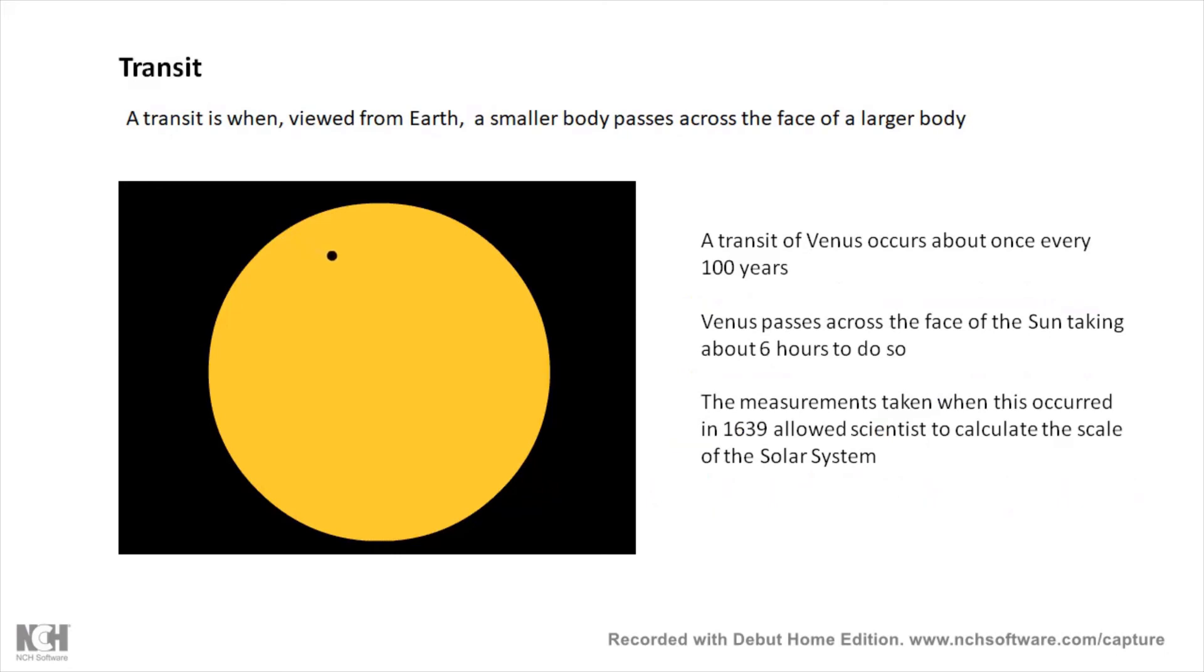A transit is when an object passes in front of a larger object as viewed from Earth. This is a transit of Venus. Transits of Venus are very important, it comes up again in another topic. They're very rare, about once every hundred years, and takes about six hours for Venus to pass across the face of the Sun.